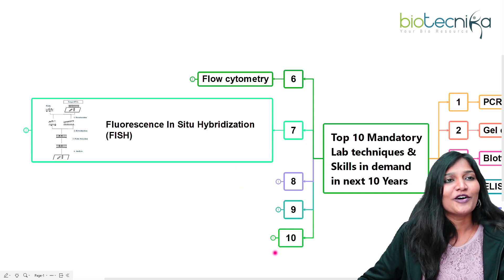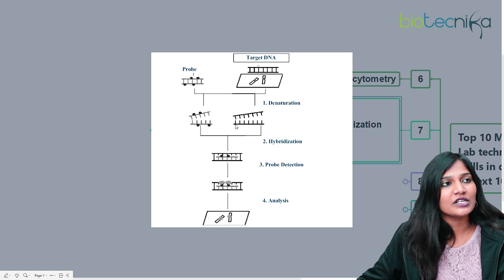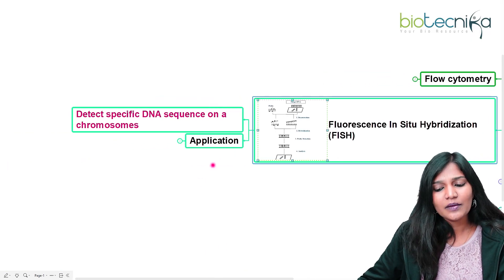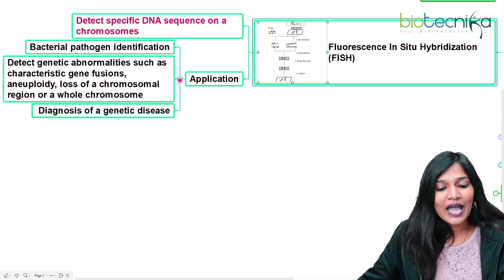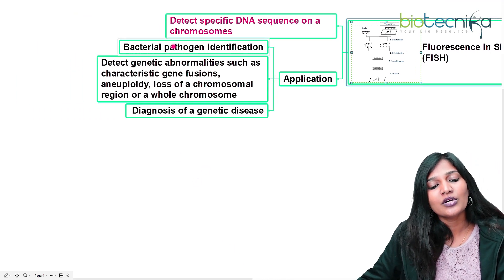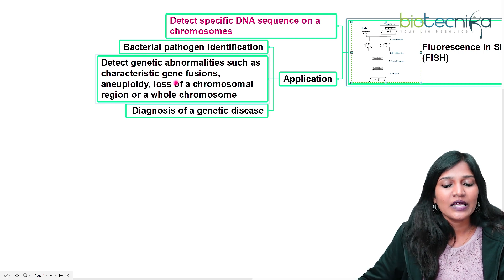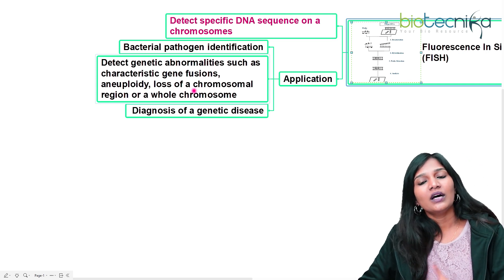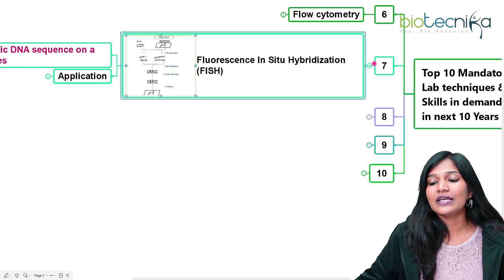The next technique is FISH — fluorescence in-situ hybridization. A DNA probe of known sequence is added to a target, both are denatured, the strands are hybridized, and then detected and analyzed. FISH is useful to find a very specific DNA sequence present in a chromosome. It can be used to identify bacterial pathogens, detect genetic abnormalities like gene fusions or aneuploidy, and diagnose genetic diseases.